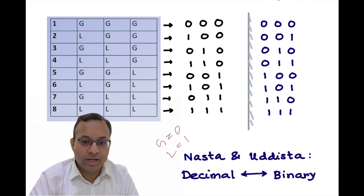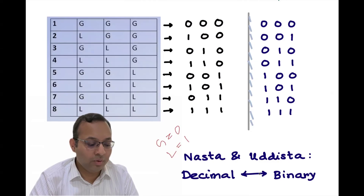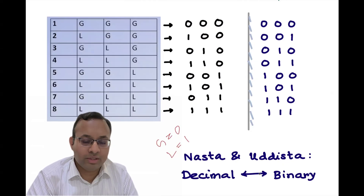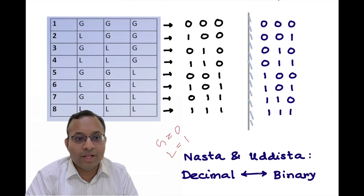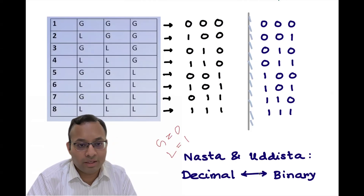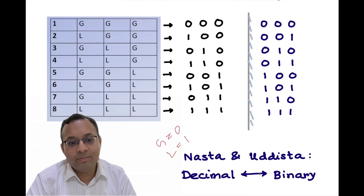Pingala also designed two algorithms — Nasta and Uddista — which convert decimal to binary and binary to decimal. For example, given LGL, which pattern number is it? The sixth. Or given the fourth pattern — it's LLG. There is a formula to compute this, which is essentially conversion between decimal and binary.